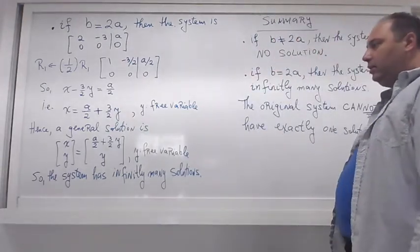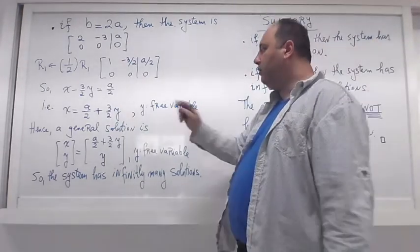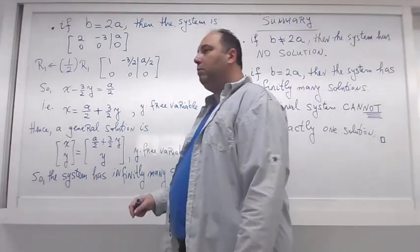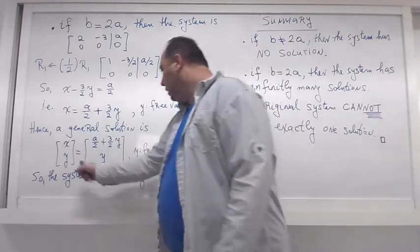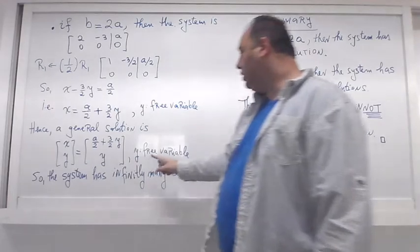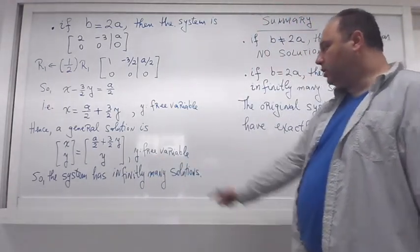3 over 2 times y, and y is a free variable. So a general solution in the case where b is equal to 2a is given here: expression for x is given, and y is still y. Y is a free variable. So because y is a free variable, we have the system with infinitely many solutions.